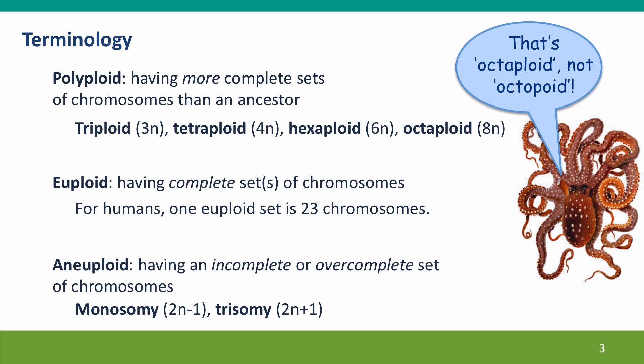Polyploid is a new term, meaning having more complete sets of chromosomes than an ancestor. Organisms that are polyploid could be triploid with three sets, tetraploid with four sets, hexaploid with six sets, octaploid with eight sets, or even higher. In contrast, the terms euploid and aneuploid refer to whether or not the sets are complete. A euploid set of chromosomes for humans is 23 chromosomes — that's a normal set. Aneuploid means not euploid; it means having sets that aren't complete, with too few or too many chromosomes, usually one too few or one too many, though more complicated situations can also arise.